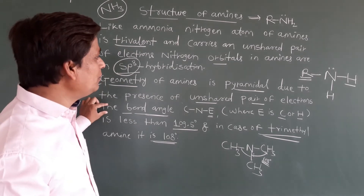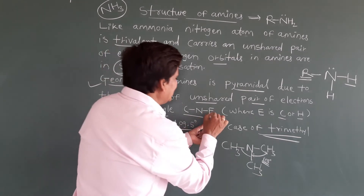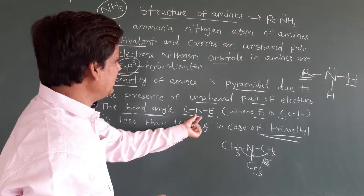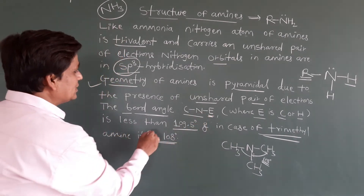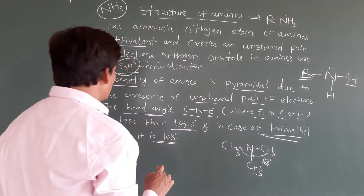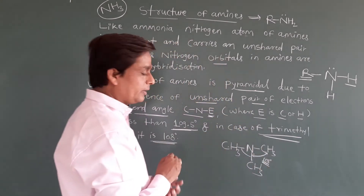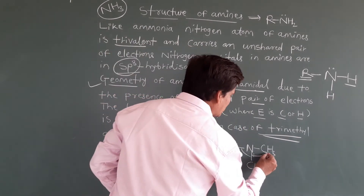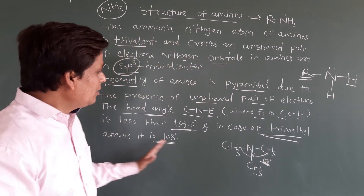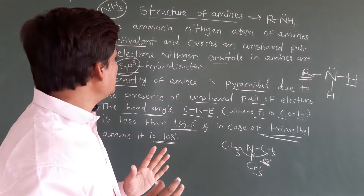Looking at the bond angle: in amines, the bond angle between carbon and nitrogen (or hydrogen and nitrogen) is less than 109.5°. In the case of trimethylamine — with three CH3 groups attached to nitrogen — the C–N–C bond angle is 108°. This is the geometry of amines.